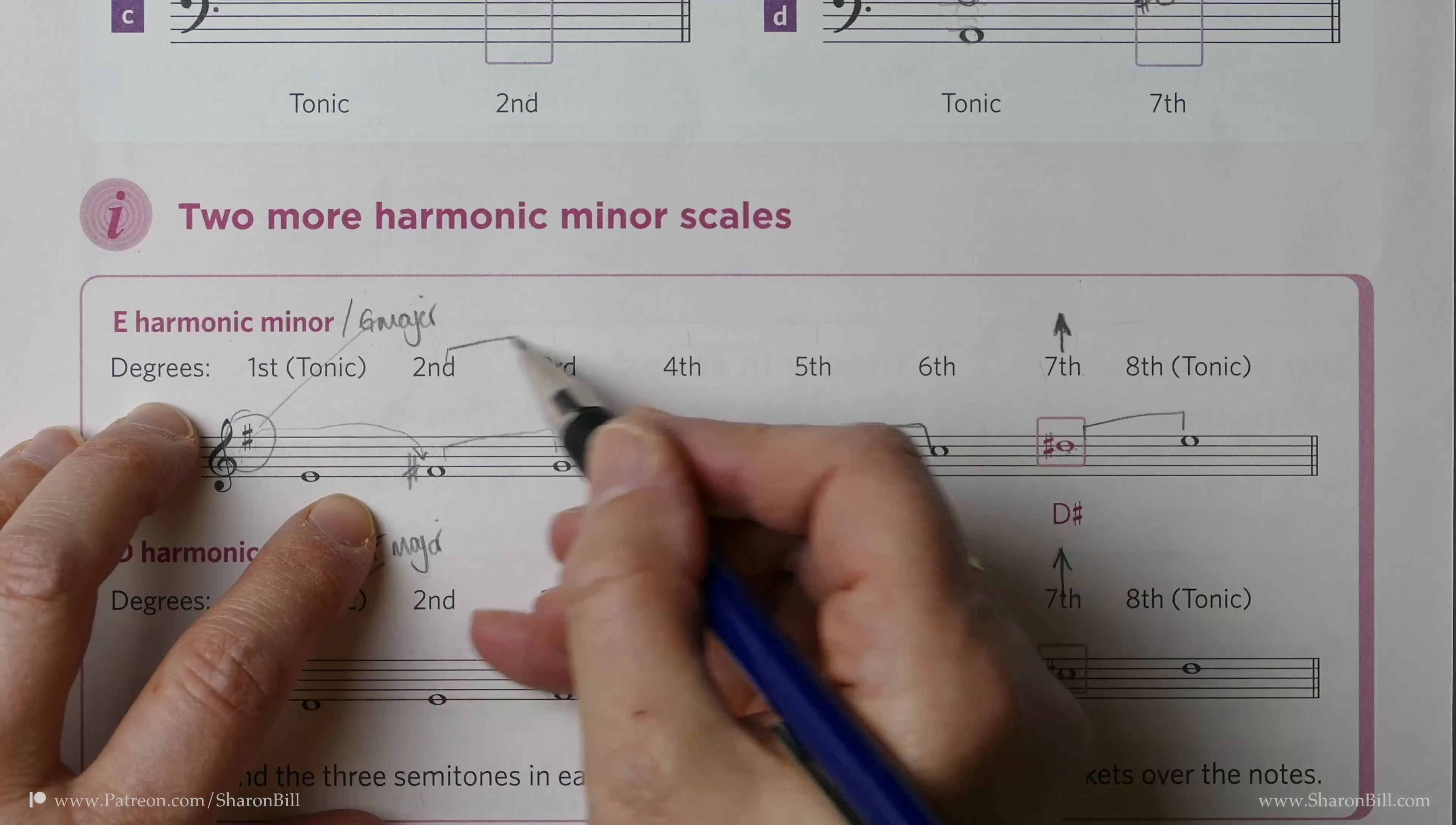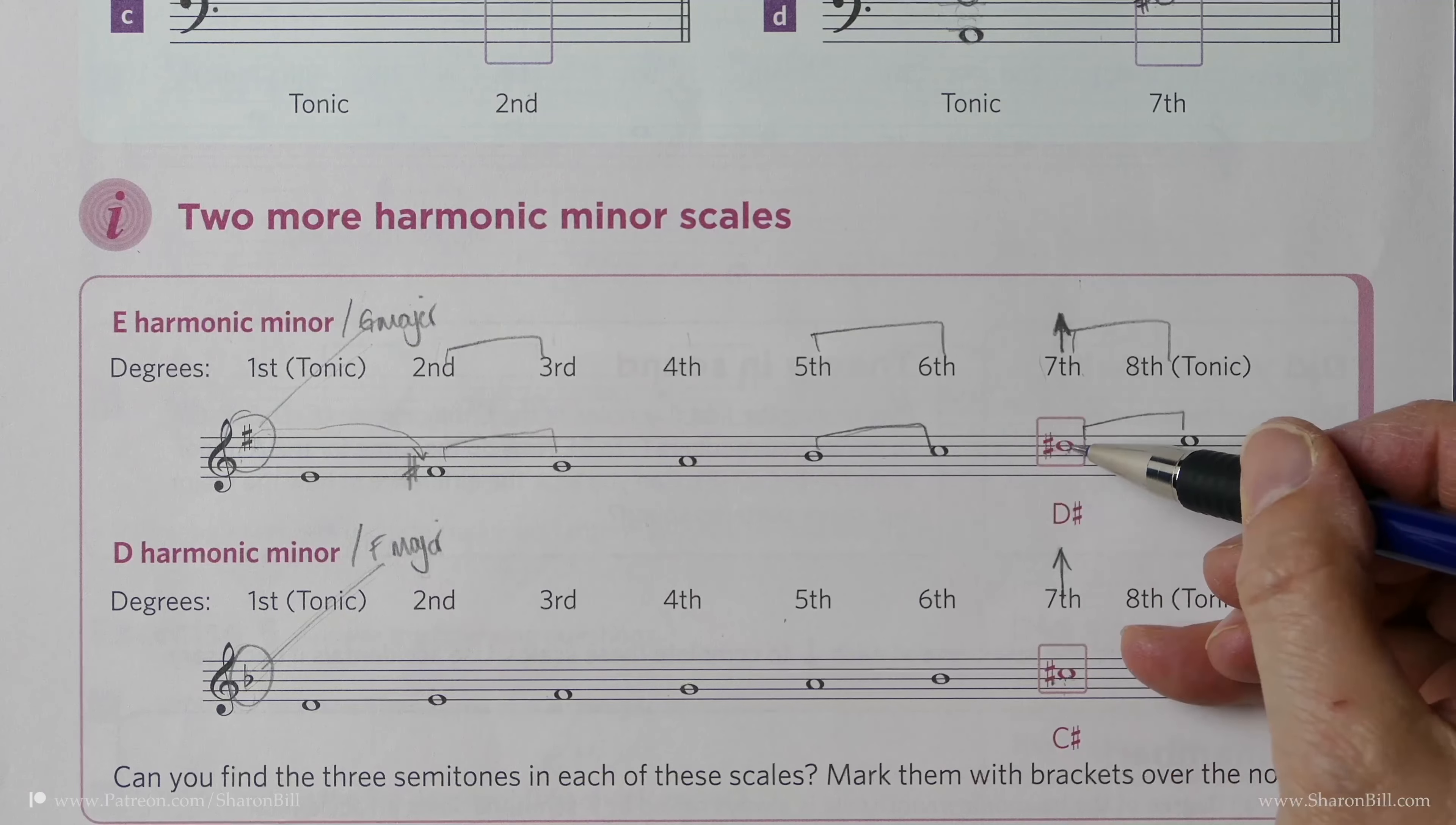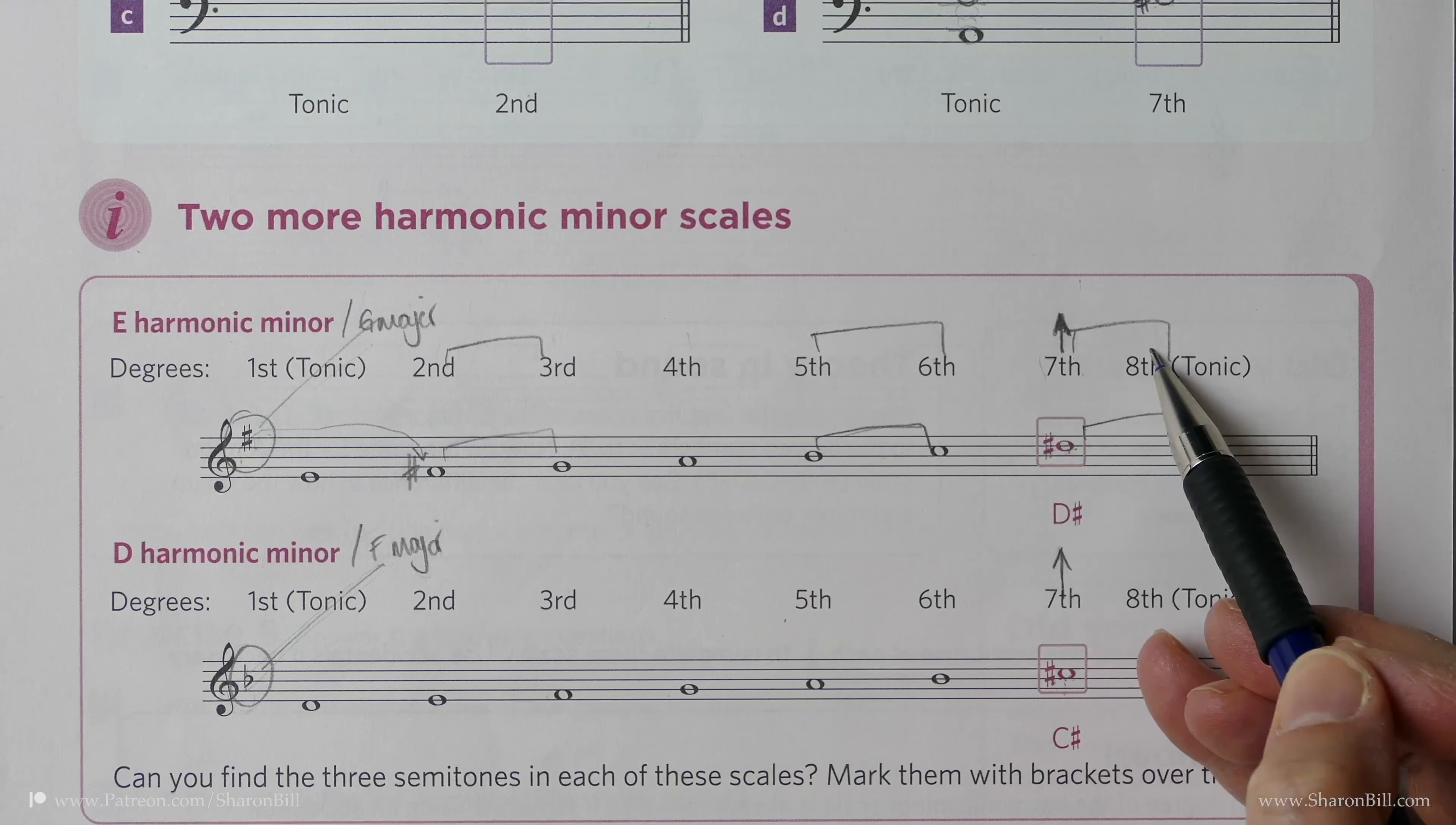However, if you remember that it's 2 to 3, 5 to 6, 7 to 8, if you've got your key signature correct and you've remembered to raise your 7th, you can just remember 2 to 3, 5 to 6, 7 to 8.